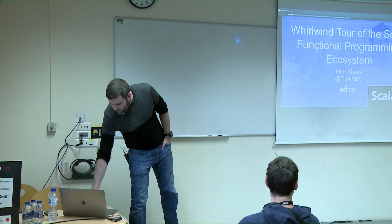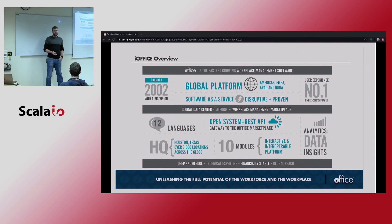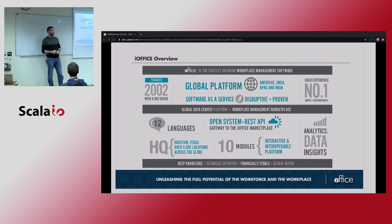I work for a company called iOffice. We've been using Scala in production for about six years. We have a large Java monolith that we've converted to about 80% Scala. Then we have about 30 microservices that are all in Scala except for one that's in Node. We mostly have been using Scala as a better Java, and in our microservices we are using Play Framework.